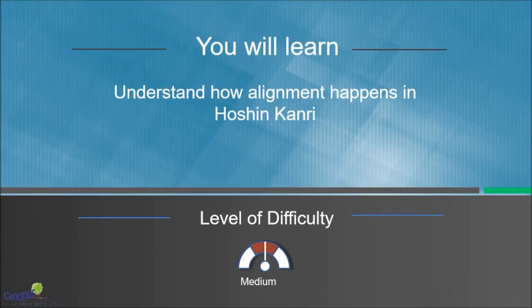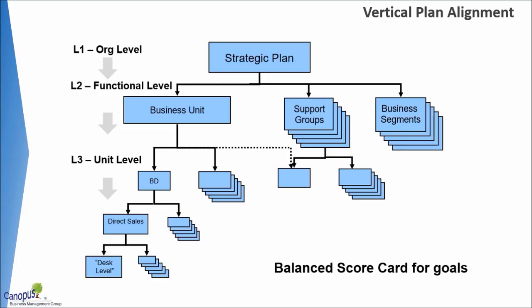In this lecture, we will understand how alignment happens in Hoshin Kanri. In Hoshin Kanri, there are two ways you can look at alignment. One is vertical alignment, and the other is horizontal alignment.